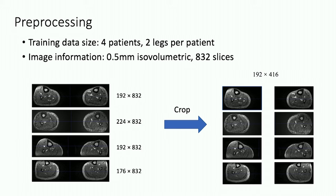To prepare for training the model, we did some preprocessing to the training data. By the end of the challenge deadline, we finished labeling four patient samples as training data. We then crop each patient data into two separate legs so that we get eight separated legs. Each leg contains 832 slices, giving us a total of over 6,400 slices for training.